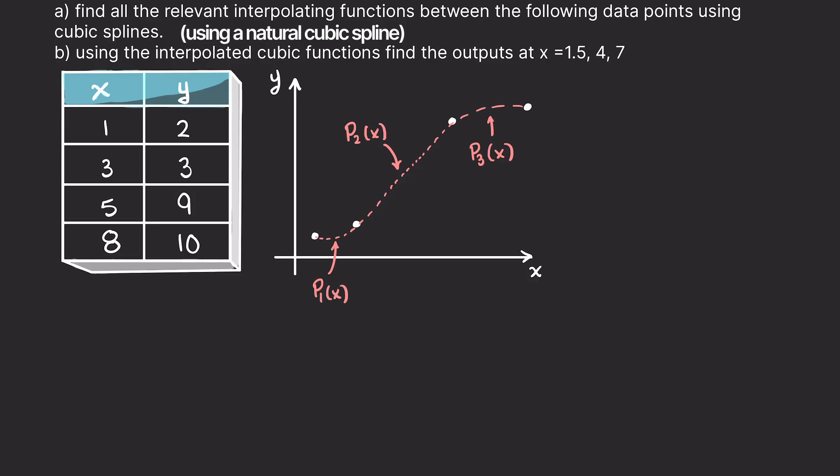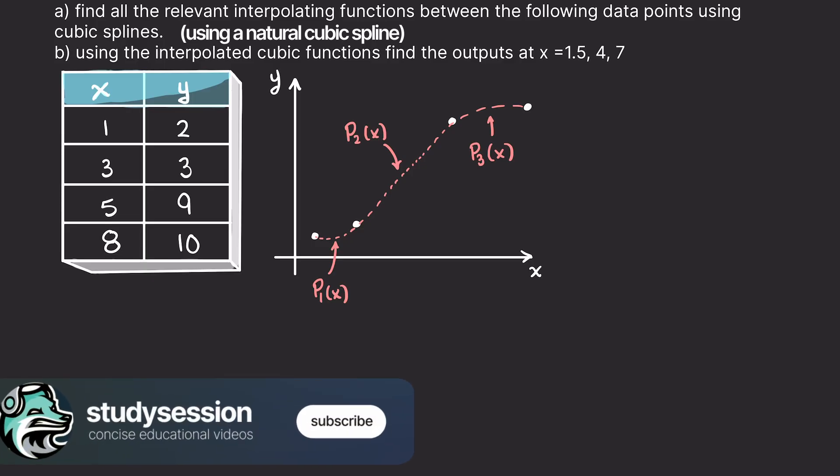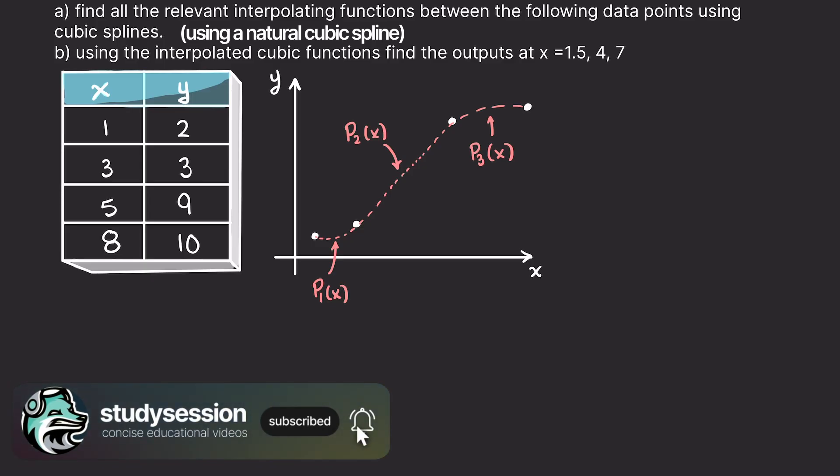Alright, let's take a look at our example. Here we have a set of data points representing the growth of a plant over time. Our goal is to interpolate a smooth curve that accurately represents the growth pattern between these supplied discrete data points. As you can see, we have four data points, and our task is to find the natural cubic spline that passes through these points.